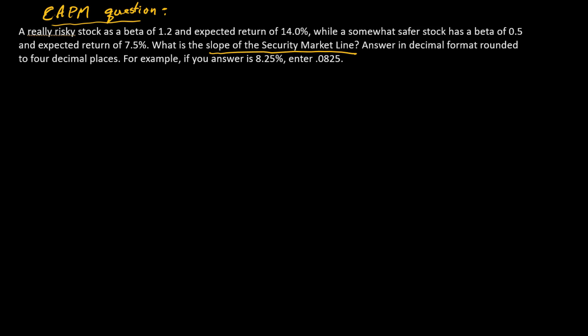And in the CAPM, the slope of the security market line is the market risk premium. That's what we're looking for, the market risk premium. So remember what the market risk premium is? It's just the expected return on the overall market minus the risk free rate. So that's what we are looking for.